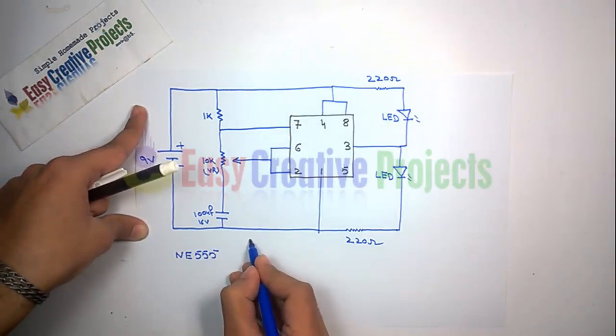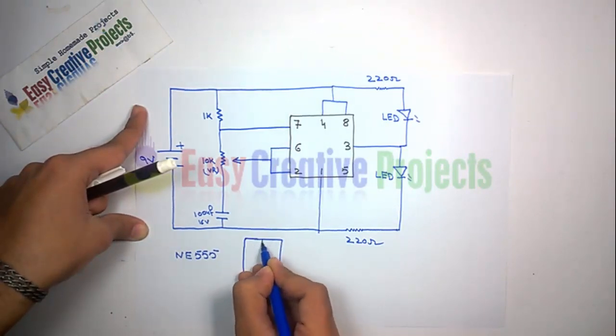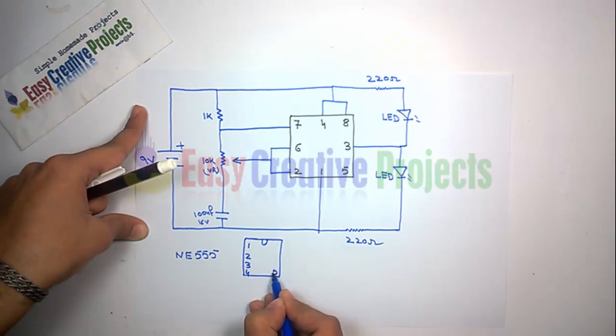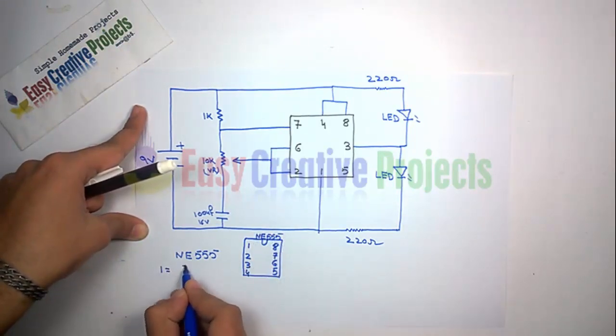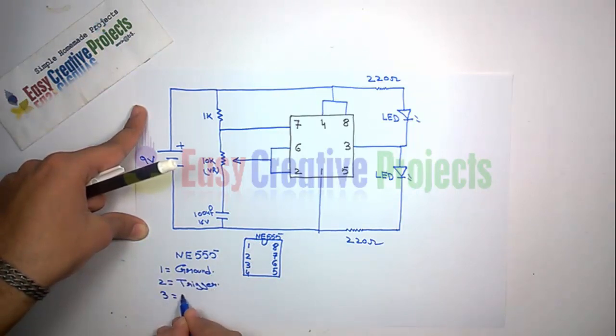NE555 IC has 8 pins. First pin is ground, second is trigger, third is output, fourth for reset,